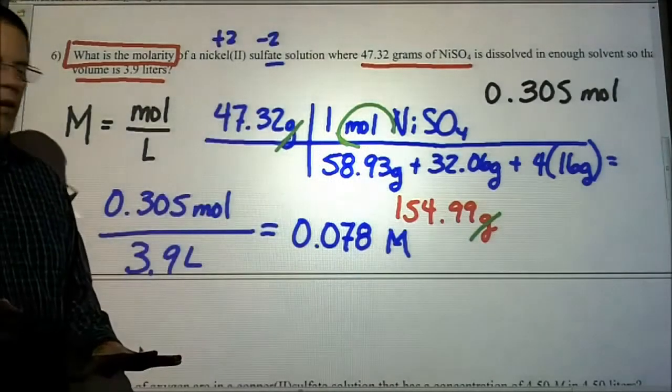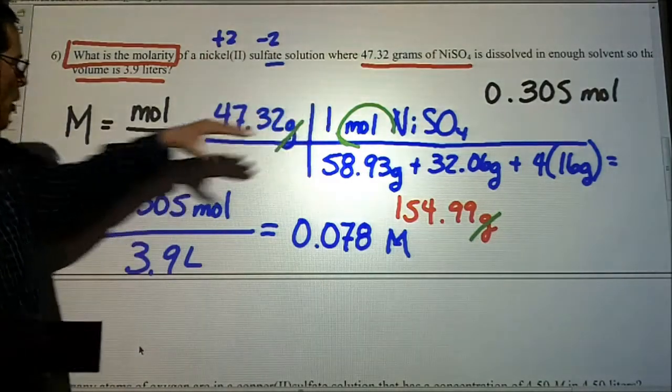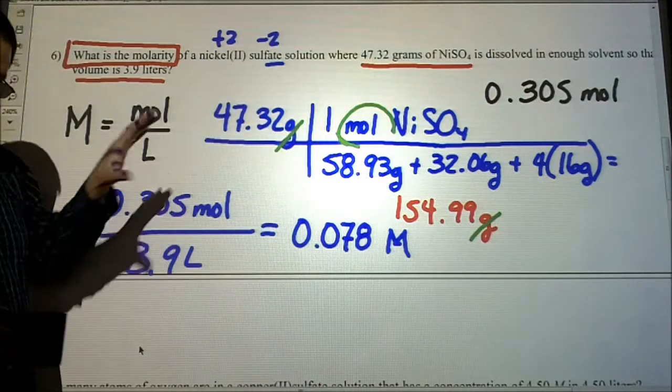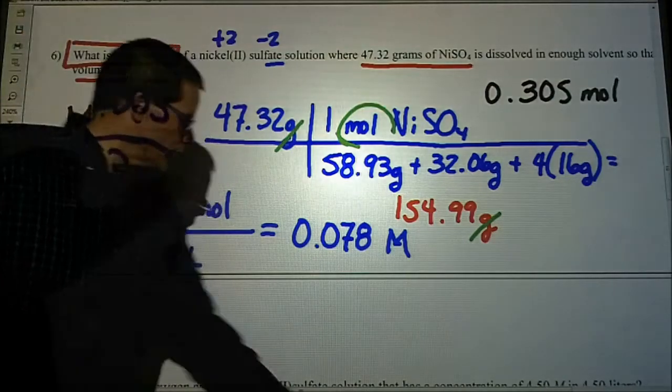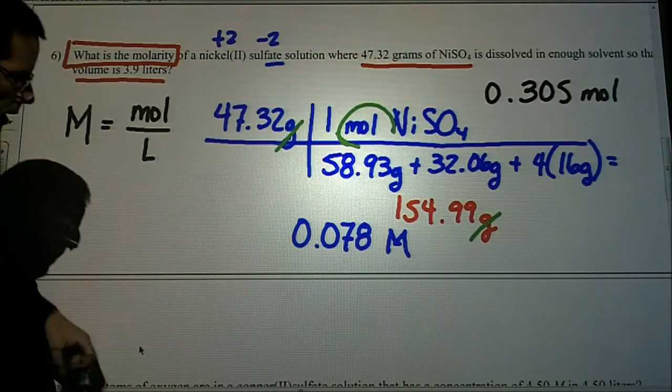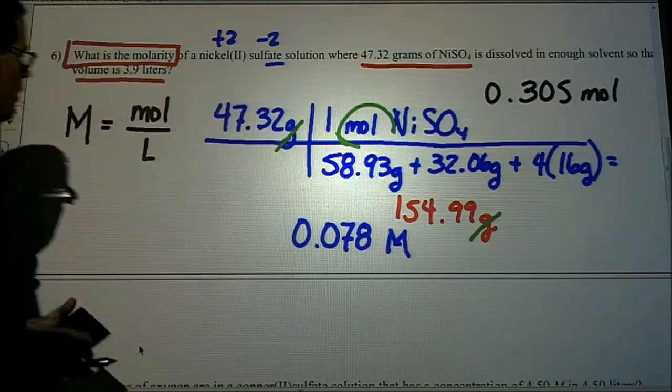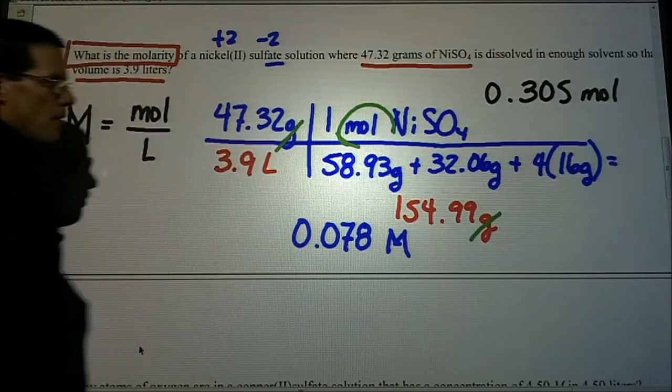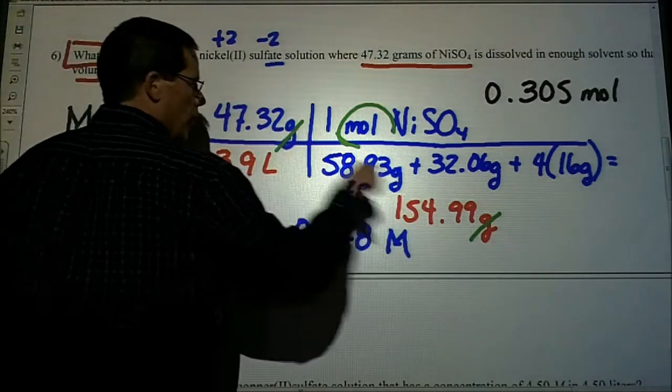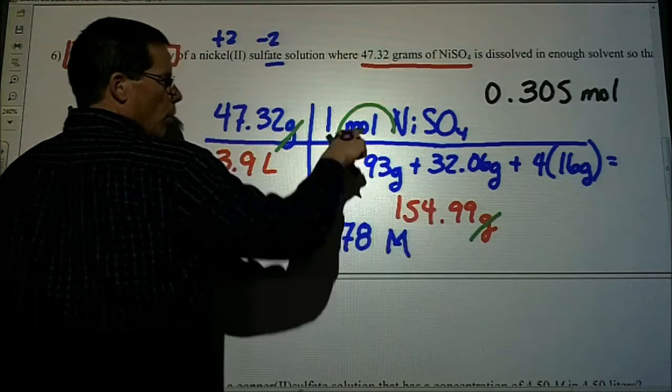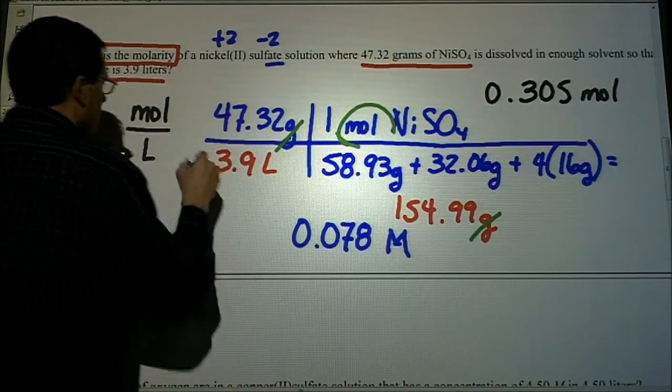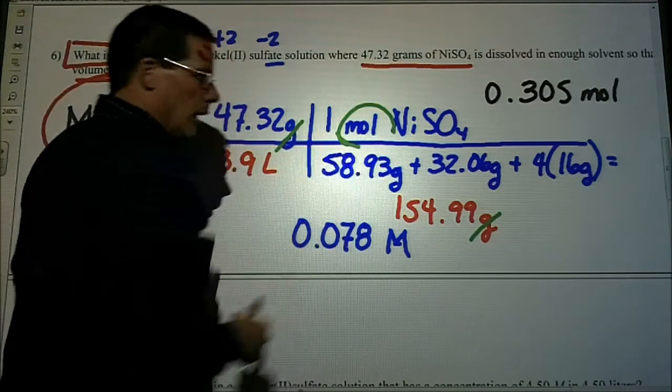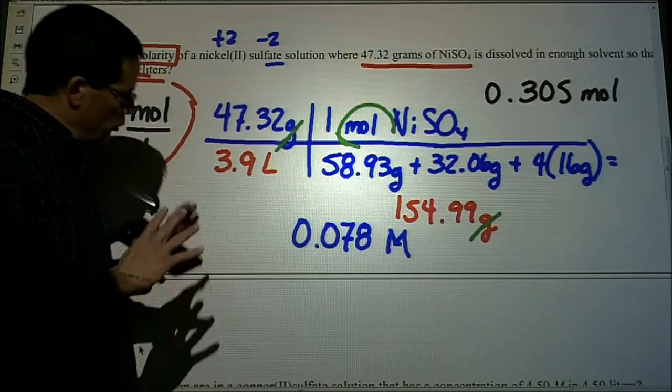There's another way that you can solve this problem. Instead of breaking it apart into finding the number of moles and finding the number of liters, you can put all of this into one thing. If you're comfortable with doing that, this is fine. You'll still get the same answer. You will take your volume, the 3.9, and you will place it there. What's nice about that is the grams are still canceling out, but we're left with moles per liter, which is our molarity. If this is confusing to you, don't do it. Break it apart.